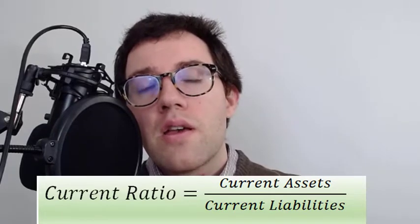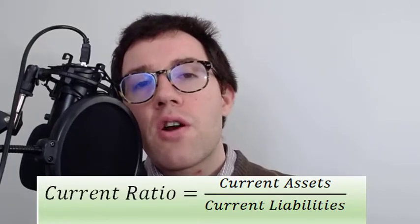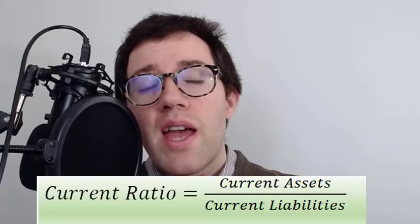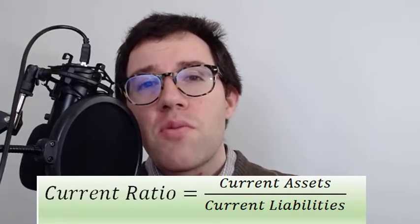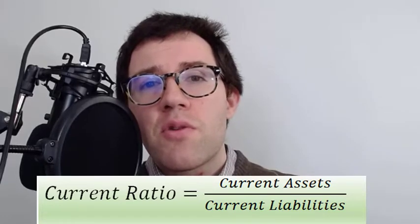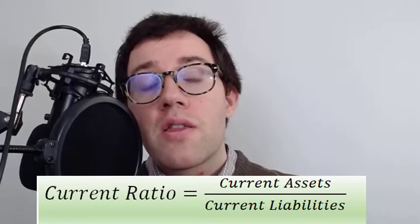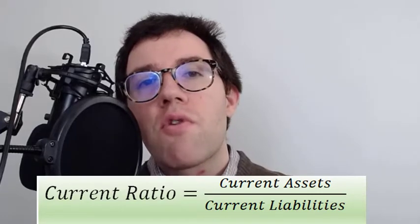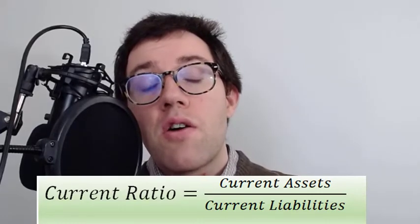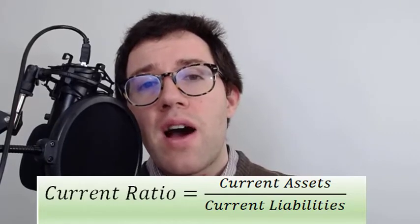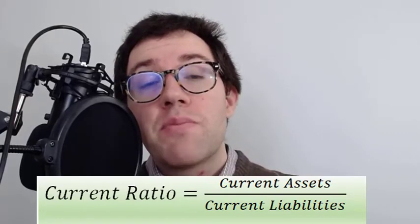The current ratio is calculated as current assets divided by current liabilities. Any current ratio below one indicates a serious problem, because that means short-term debts are greater than current assets. As a general rule, I like to see a current ratio above one — ideally at least 1.5 — though it varies by industry.